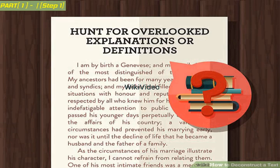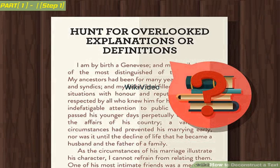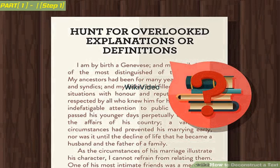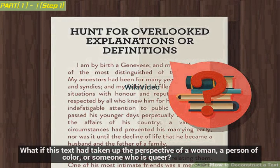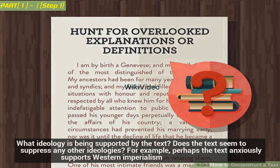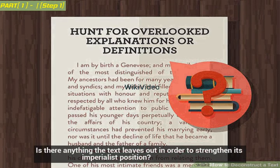Ask yourself: what is unconventional or strange about the text? Are there any traditions that the text is flouting — literary or political, such as inhabiting a feminist perspective? How would this text be different if it had been narrated from another character's perspective? This is an especially good question to ask if the narrator is a white heterosexual man and there are minor characters who embody minority identities. What if this text had taken up the perspective of a woman, a person of color, or someone who is queer? What ideology is being supported by the text? Does the text seem to suppress any other ideologies? For example, perhaps the text anxiously supports Western imperialism. Is there anything the text leaves out in order to strengthen its imperialist position?